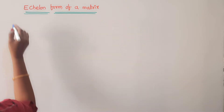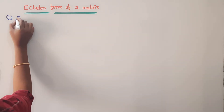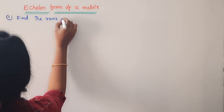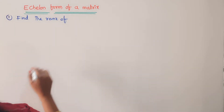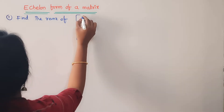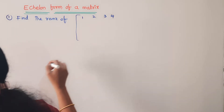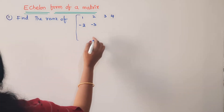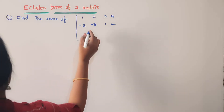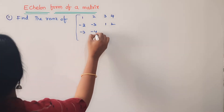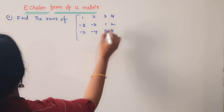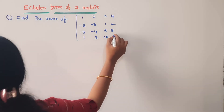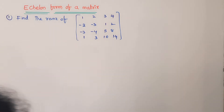Find the rank of this matrix — it is asked very many times. The matrix is: row 1: 1, 2, 3, 4; row 2: minus 2, minus 3, 1, 2; row 3: minus 3, minus 4, 5, 8; row 4: 8, 1, 3, 10, 14. This question is repeated many years.